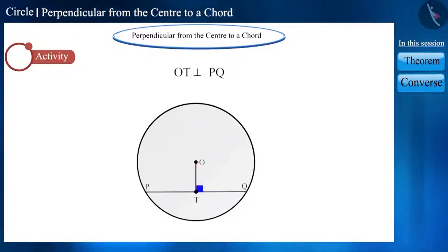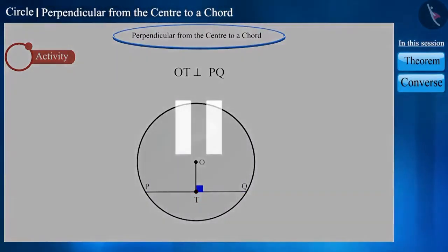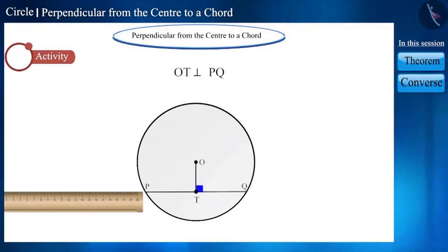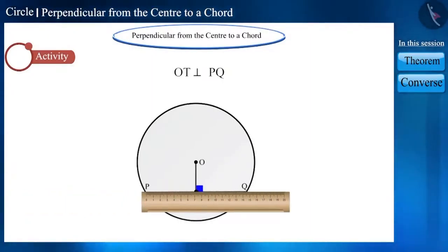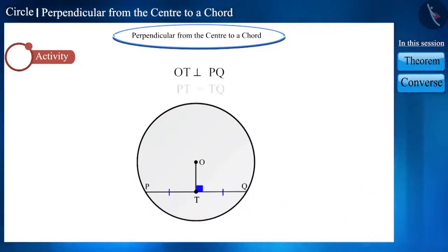Friends, here T is the midpoint of chord PQ. You can pause the video and check it. Now we can see that the length of these two segments are equal. That is, line segment OT perpendicularly bisects chord PQ.